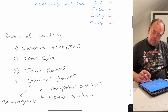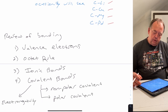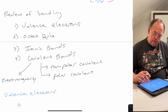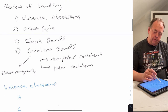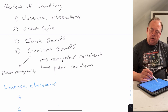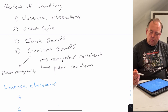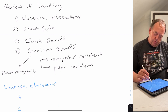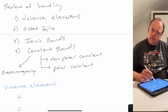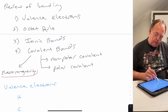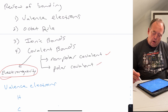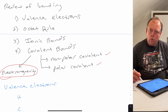A basic place to start in organic chemistry is to review bonding. To understand bonding you need to know what valence electrons are and what the octet rule is. We'll review ionic bonds and covalent bonds, and to understand covalent bonds you have to understand what electronegativity is. Once you understand that, we can discuss non-polar covalent bonds and polar covalent bonds.